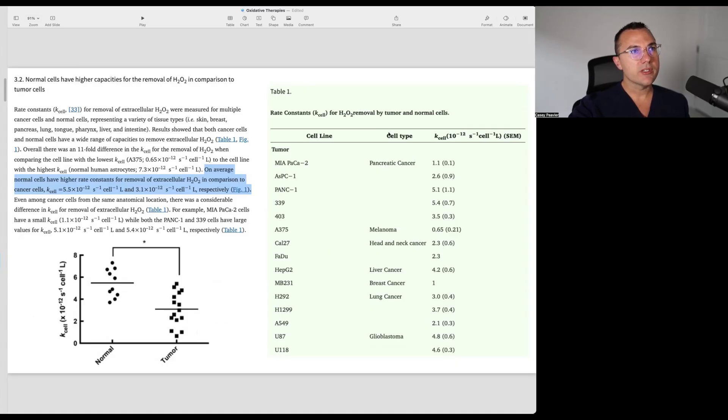And we can see here that this is the ability for each tumor type to get rid of hydrogen peroxide. And we see here that the average for a normal cell is about 5.5. And some of these cancer cells have much lower like breast cancer, head and neck cancers, melanoma, and some types of pancreatic cancers have very low ability to get rid of hydrogen peroxide, even much lower than the average of cancer cells.